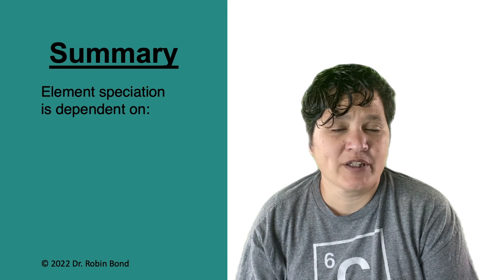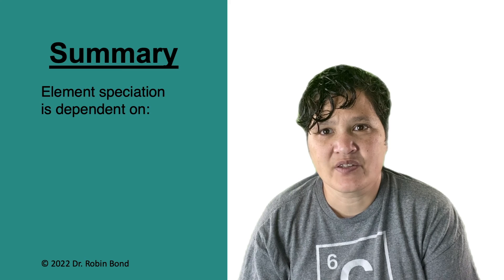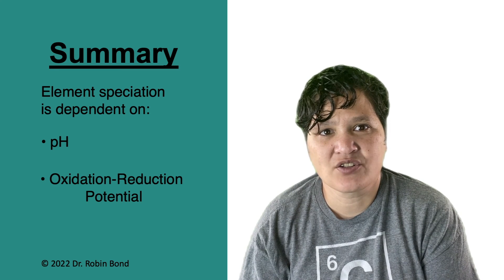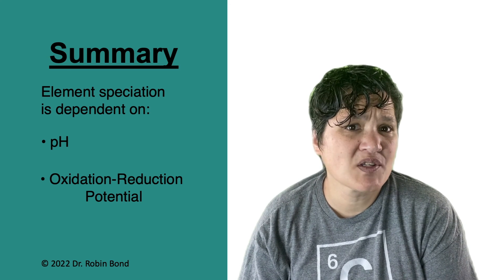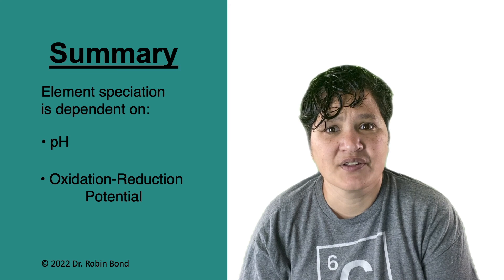One of the things that we'll be learning in this class is that element speciation is really dependent on a couple of things. What's around it, what the pH of the system is, and what the oxidation reduction potential of the system is. Understanding these relationships helps us to predict the speciation of an element under a given set of conditions.